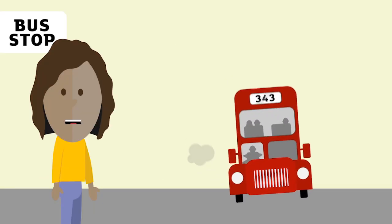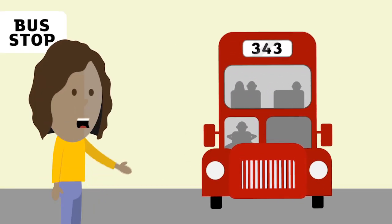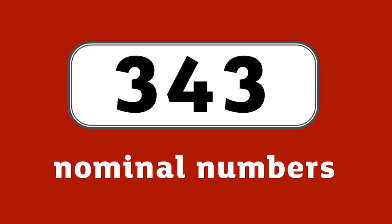And some numbers are used as a name or a label to identify something. They do not have a positional value. The bus number does not tell us about the size or position — it is simply a name or label. These are known as nominal numbers.